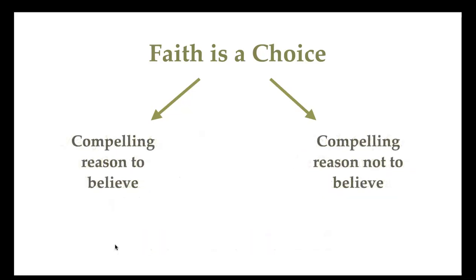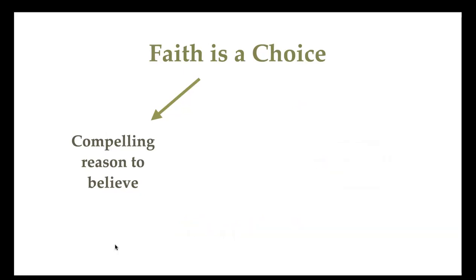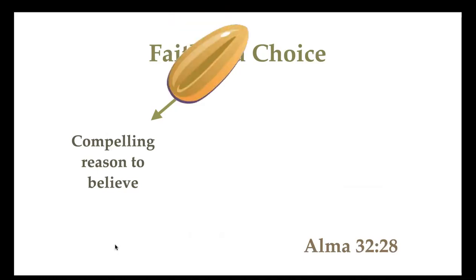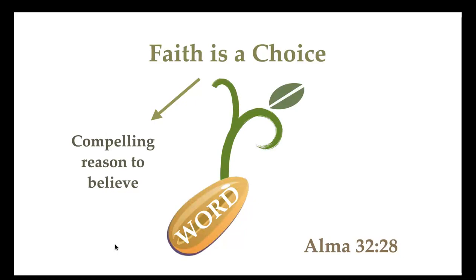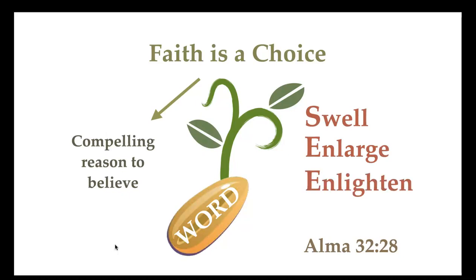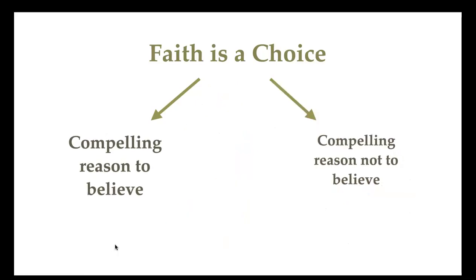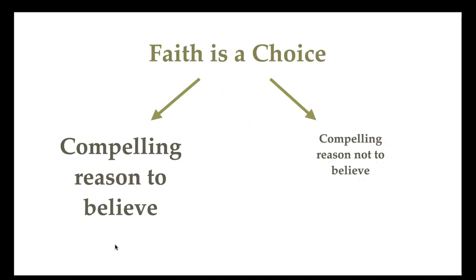So when we incorporate the teachings in Alma 32, verse 27 tells us that we need to do an experiment if we want to know which direction to go. First, we plant a seed. Remember, the seed is not faith — it is the Word of God. We plant the Word of God and then, as we nourish it, we see what it does. We find that it swells within us, enlarges our soul, enlightens our understanding, and becomes delicious to us. Then we know it's a good seed, or that the Word is good, and it strengthens our faith. We now have an increased reason to believe and a decreased reason not to believe. And that's the journey of faith.